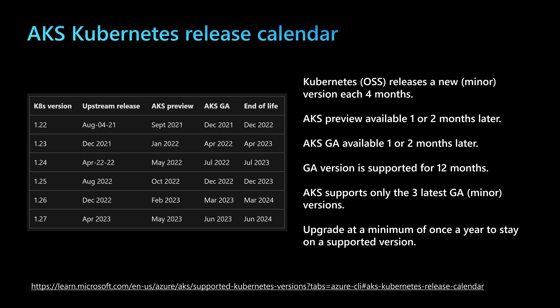That GA version will be supported for 12 months, and AKS supports only the three latest general availability versions. This means cluster administrators need to upgrade at a minimum of once a year to stay on a supported version. The table shown here is an example of the different supported versions, taken from the Azure AKS documentation link that is always kept up to date.